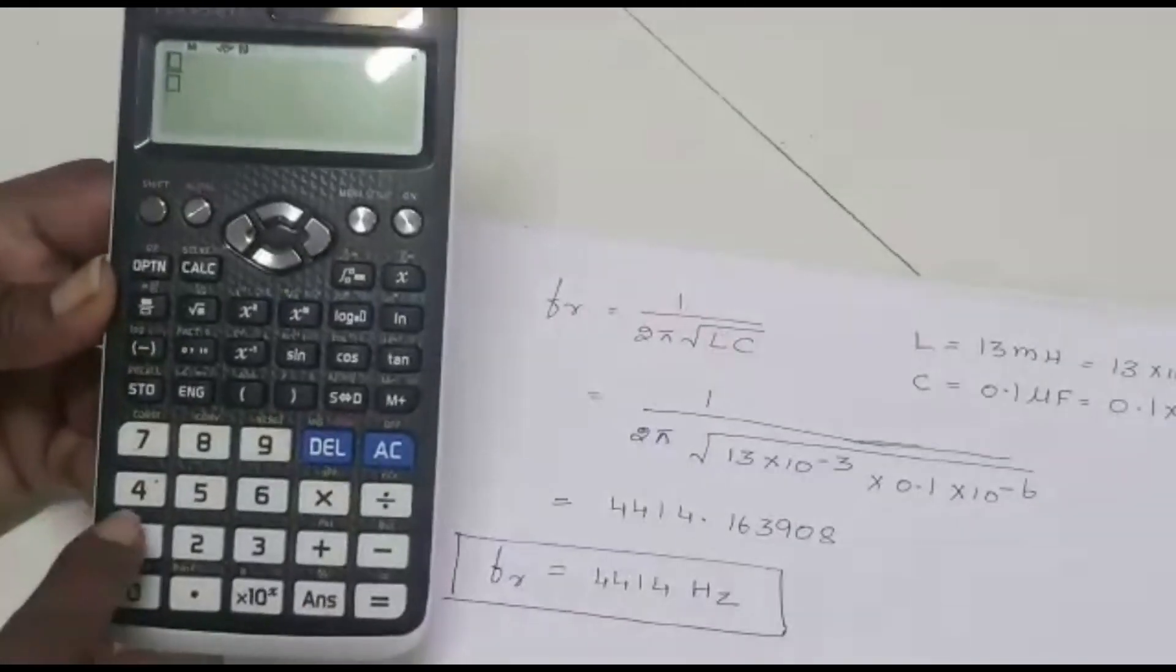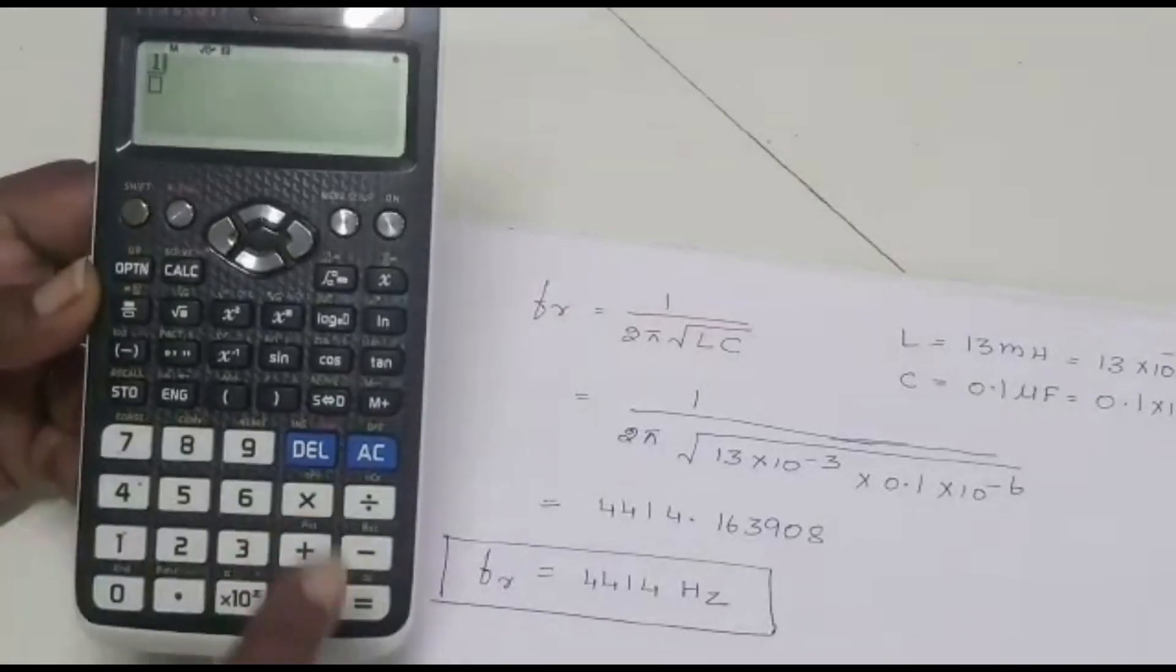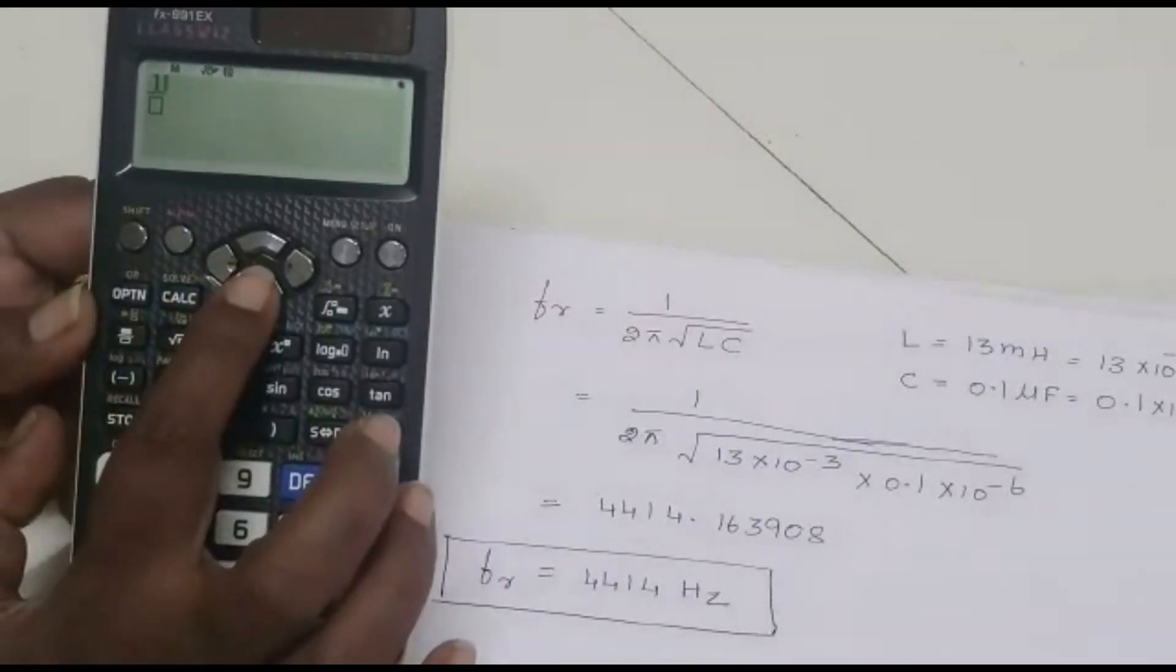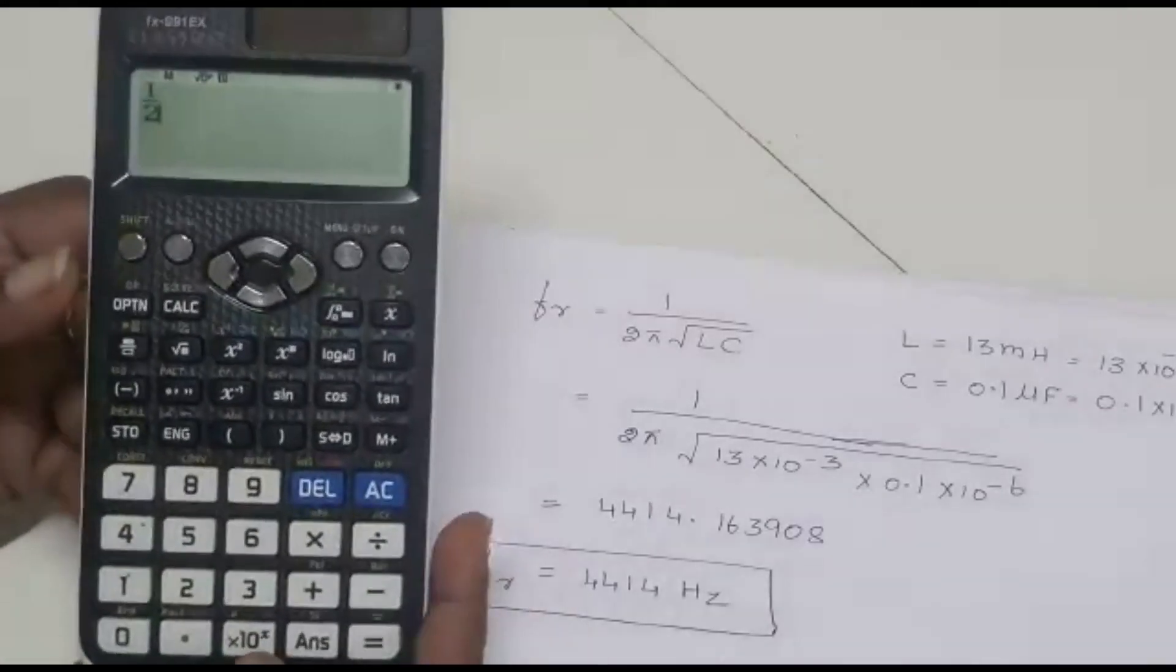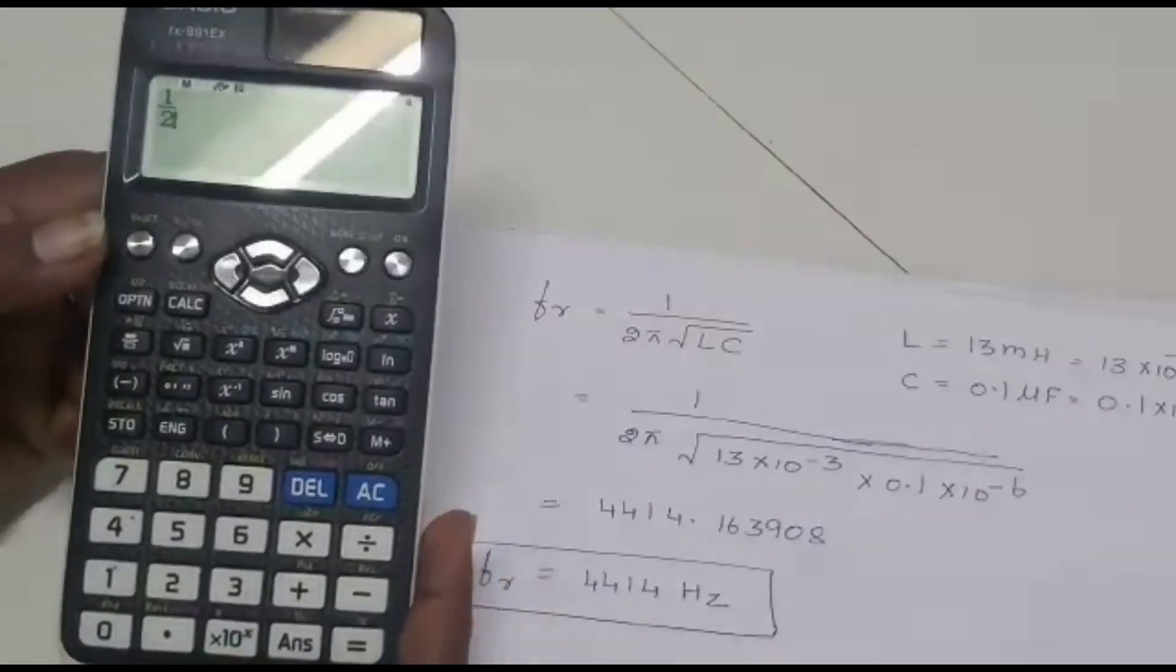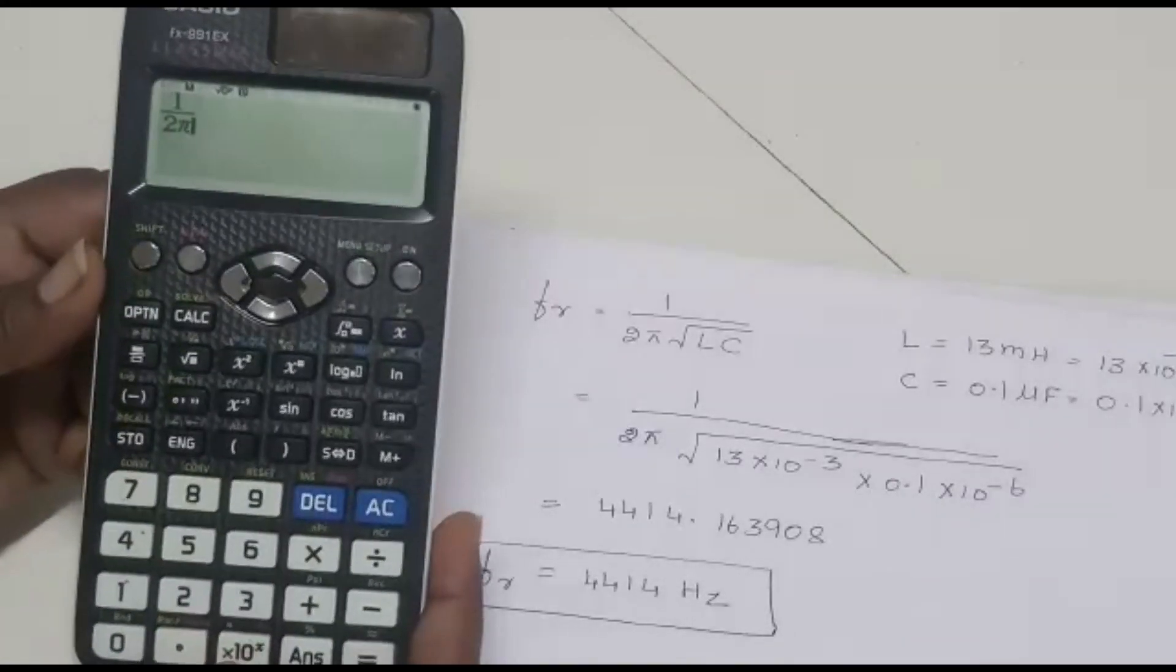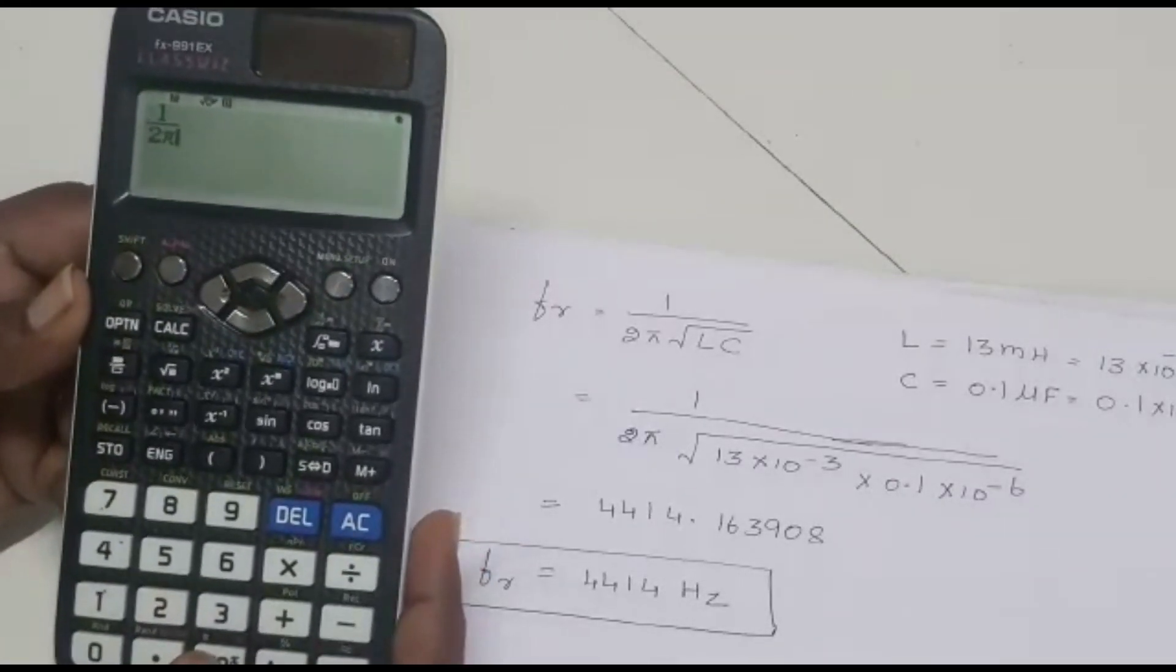In numerator, we have only 1, press 1. Then we should come down, so press the down button. Now we come down. As you know, pi should be substituted like this, shift of this button. It is showing the value of pi.